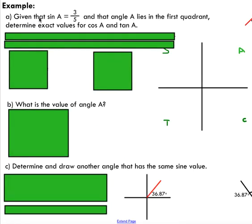First one here: given that the sine of some angle A is 3 over 5, and we know that that angle lies in the first quadrant. Remember, when we look at our unit circle and we rotate a terminal arm, we can rotate that angle through different quadrants. Our goal here is to determine the exact values for the cos of A and tan of A. We don't know much about this angle A, but we do know it lies in the first quadrant.